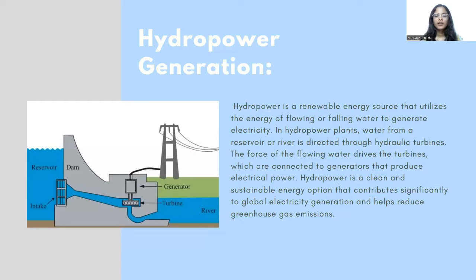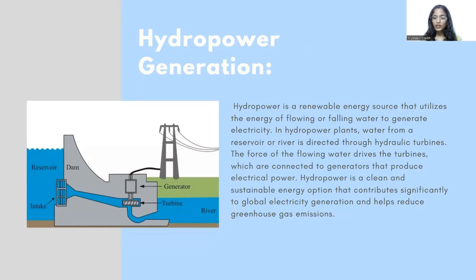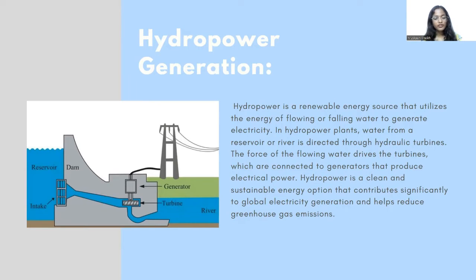Hydro Power Generation is another example of hydraulics engineering. It is a renewable energy source that utilizes the energy of flowing water to generate electricity. In hydropower plants, water from a reservoir or river is directed through hydraulic turbines. The force of the flowing water drives the turbines, which are connected to a generator that produces electric power. Hydro Power is a clean and sustainable energy option that contributes significantly to global electricity generation and helps reduce greenhouse gas emissions.